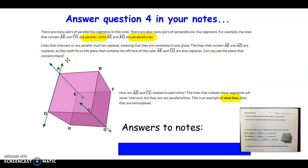Question four, it says there are many pairs of parallel line segments in this cube, but there's also many perpendicular line segments. For example, the lines that contain segment AE, like you see here, and CG are parallel. They would never intersect. Now segments AE and AD are perpendicular. They would intersect to form right angles. Lines that intersect or are parallel must be coplanar, meaning they must be in one plane together. So the lines that contain AE and AD are coplanar. They both lie in plane AE, HD, that face of the cube. Can you see the plane that contains the parallel lines AE and CG? It's not one of the faces, is it? It would be like a slice that we took diagonally down the cube. But that would be a plane containing both AE and CG.